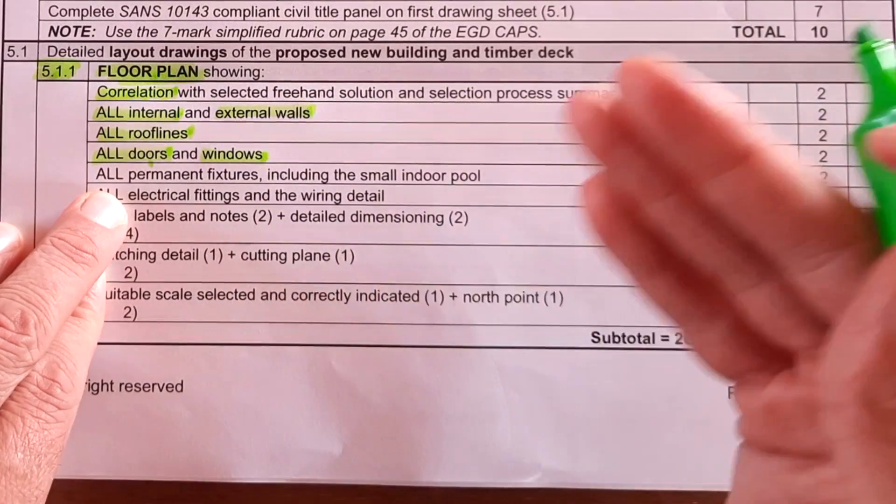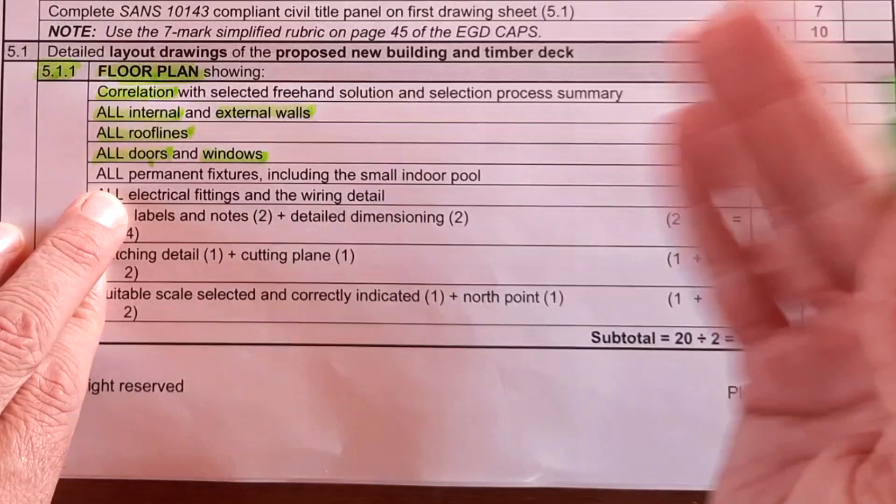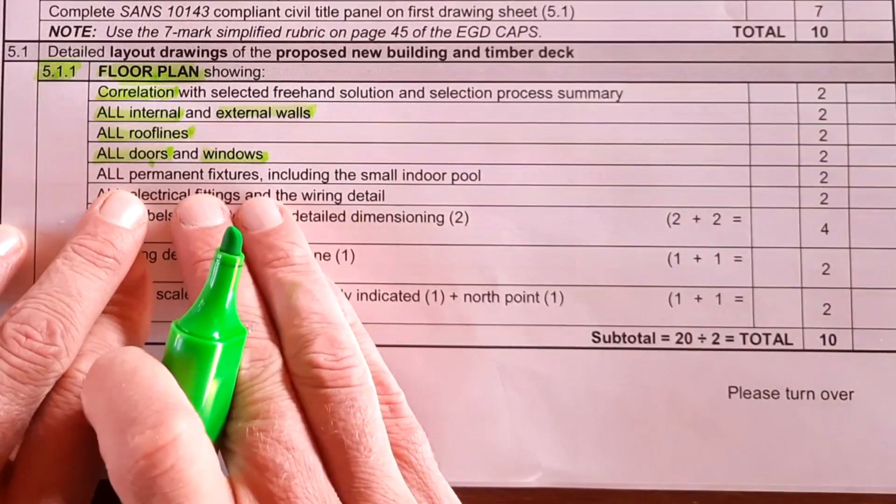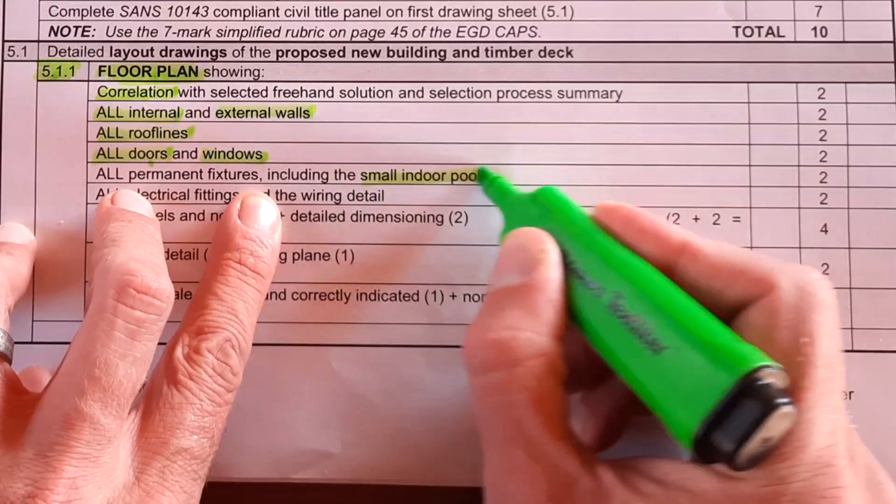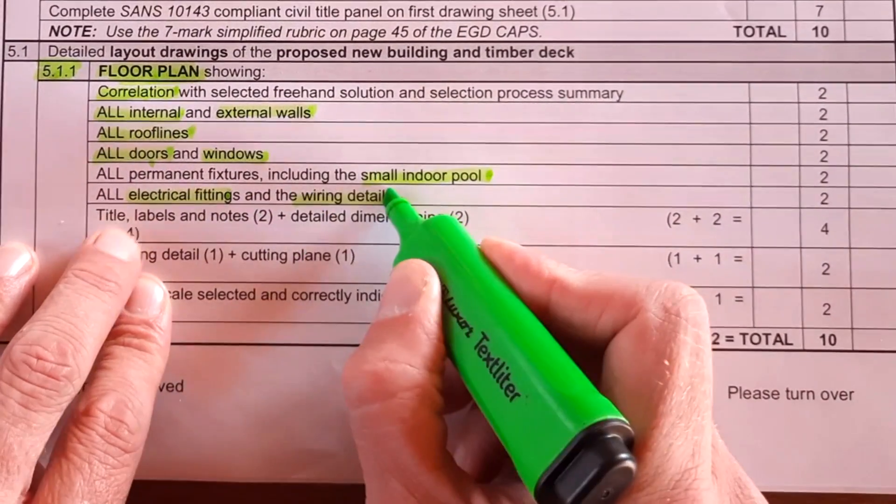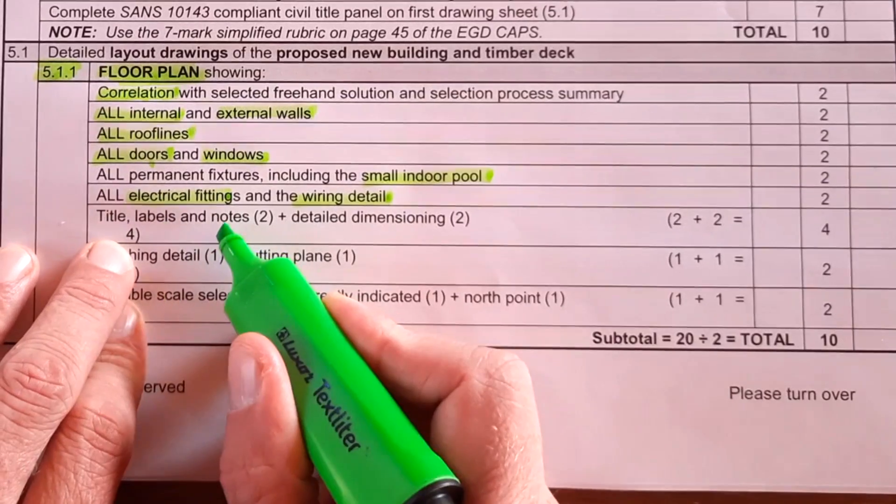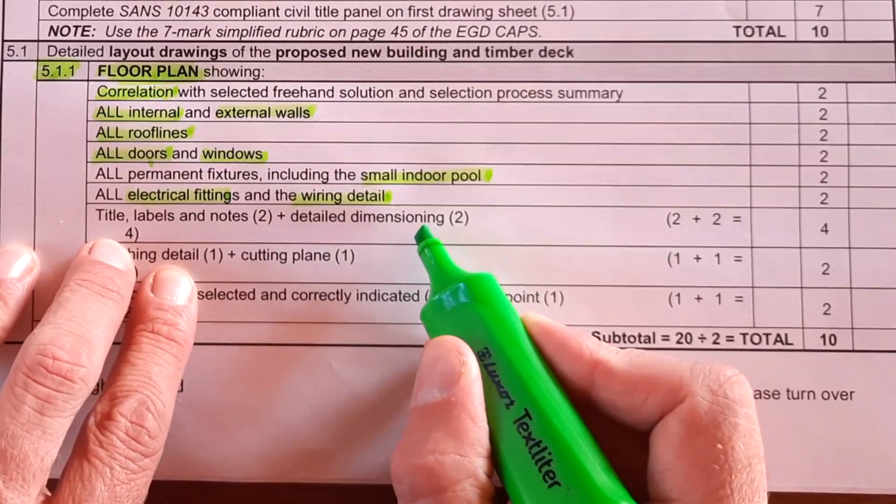The lockers, which is built in cupboards. Your bathrooms, your toilets, your stove, all of that. Did you include the small indoor pool? All electrical fittings with wiring. Title labels and notes, which I just explained. And the detail dimensioning.